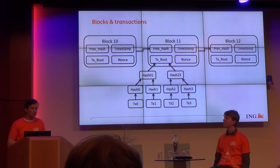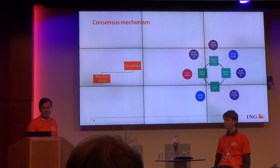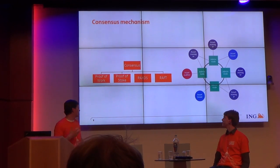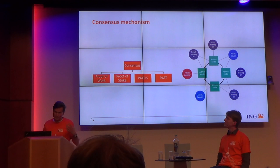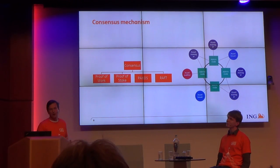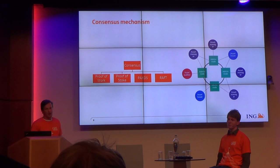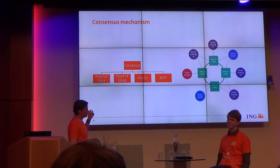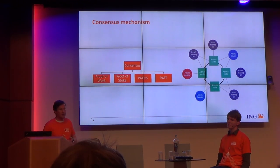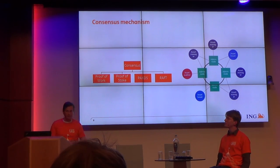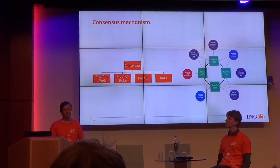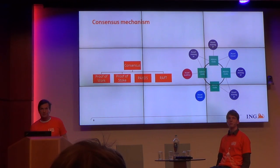This mechanism is called proof of work. There are other consensus mechanisms: proof of stake — where whoever owns the most assets has the biggest vote — and Paxos and Raft, two versions of PBFT. Proof of work is proven in production; it's used in Bitcoin. However, it is very energy intensive and slow — it doesn't scale very well — so there are other consensus mechanisms being explored.